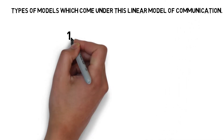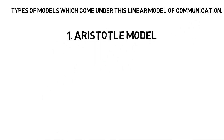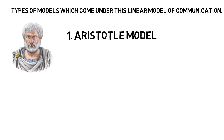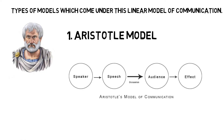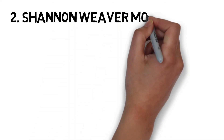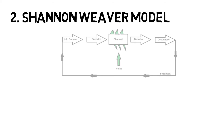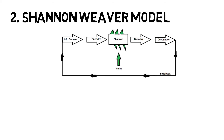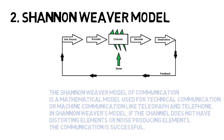There are many types of models which come under the linear model of communication. Aristotle's model is a linear communication model which was made for public speaking. In Aristotle's model, the speaker sends the message and the audience receives it. The model was made to establish propaganda.